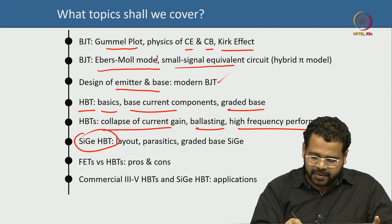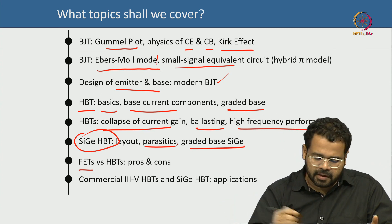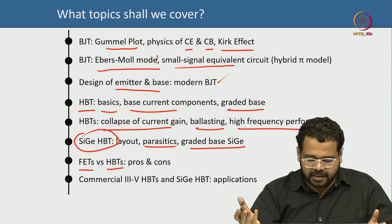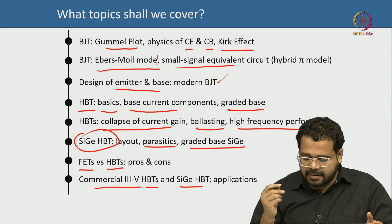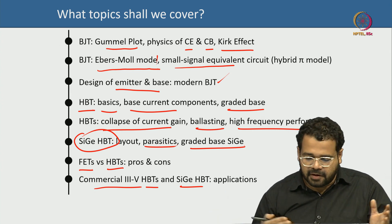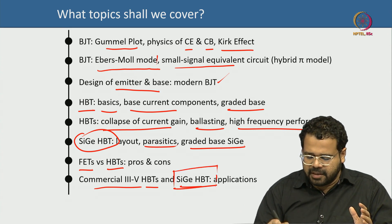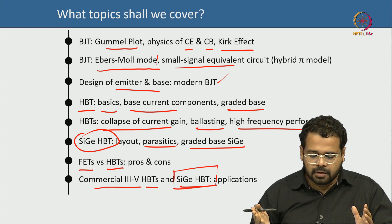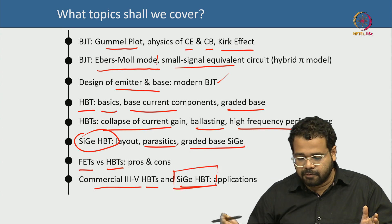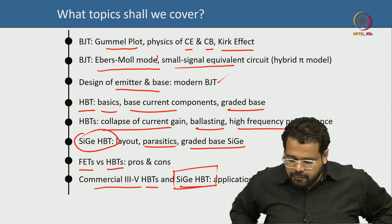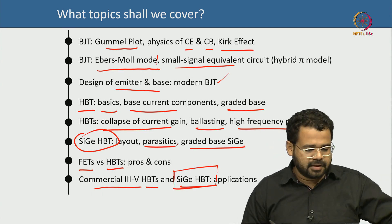Then we will cover silicon germanium — a very critical technology today — including its layout, parasitics, and graded base SiGe devices. We will have one slide on differences between FETs (MOSFET, HEMT) versus bipolar devices — pros and cons for each. Then we will discuss commercial real-world compound semiconductor HBT and SiGe HBT, including their use in integrated chips within front-end modules of cellular radios.